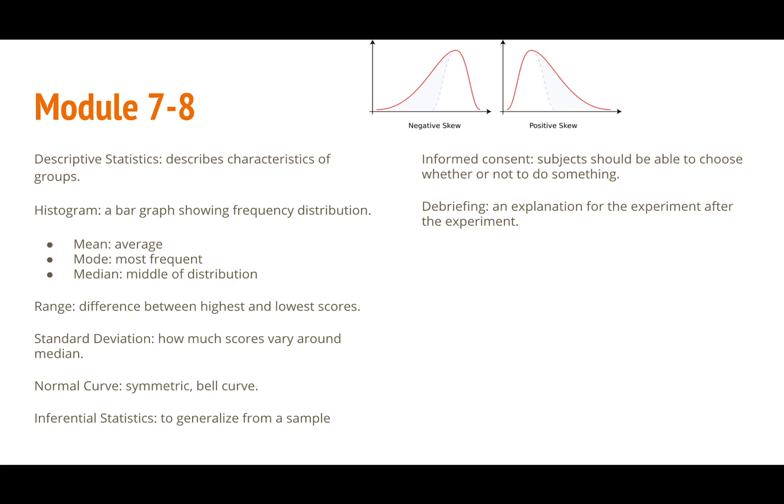Standard deviation is how much a score varies. A perfect experiment will almost always output a normal bell-shaped curve.